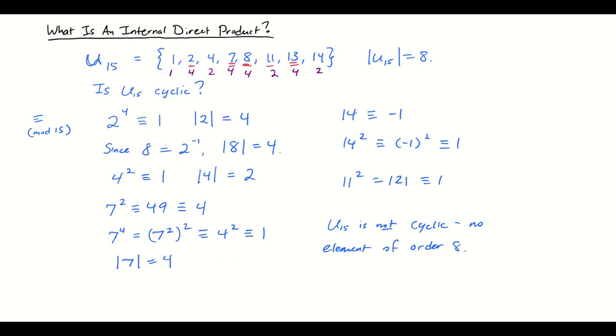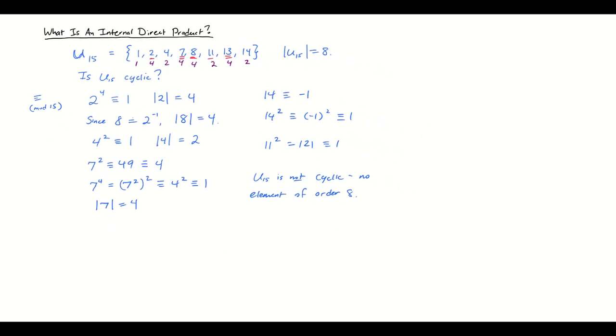One thing that we noticed along the way that I think might be helpful is the fact that we did have an element whose order was pretty big. We had an element of order 4 and that was 2. So we might start by looking at the subgroup generated by 2. That subgroup is 1, 2, 4, and 8. This is a subgroup of U mod 15. Let's call this H.